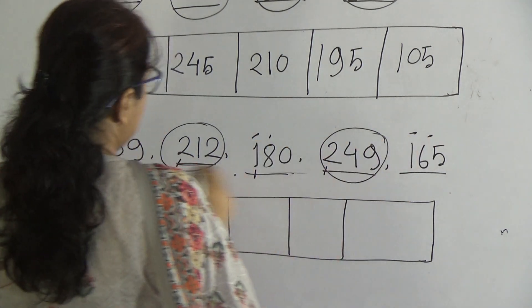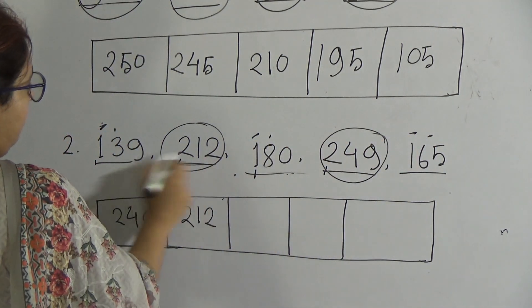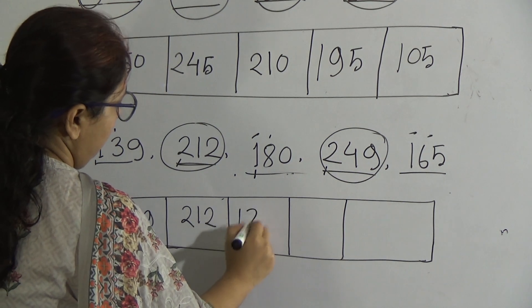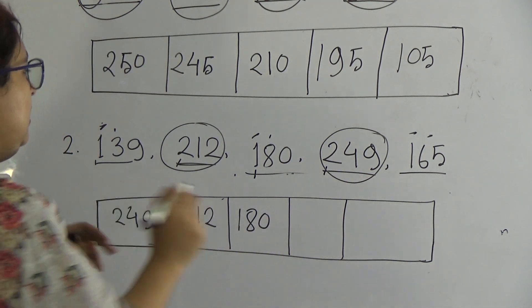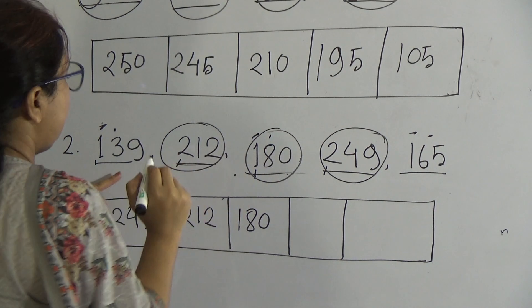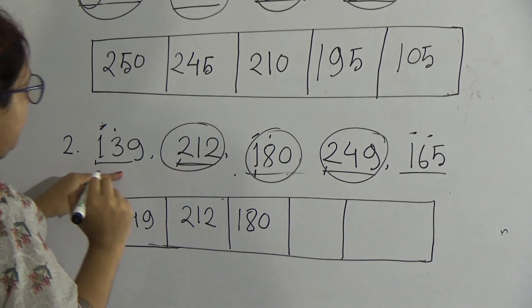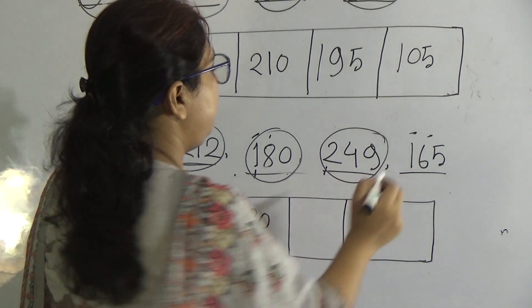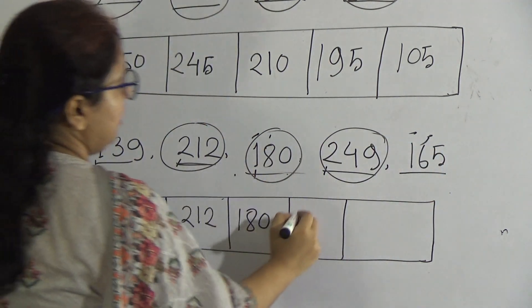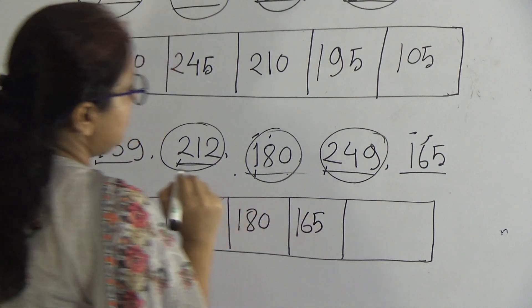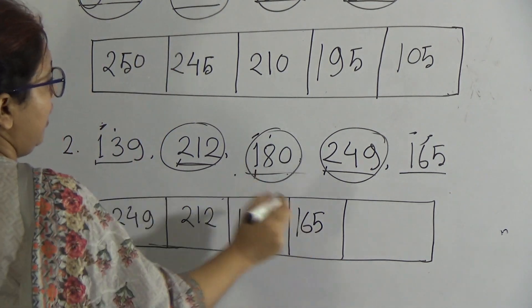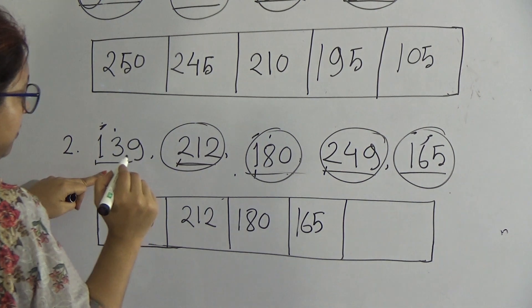Now move on: 212, 139, 180, and 165. First digits are also same: one, one, and one. Now move to second digits: three, eight, and six. So eight is the biggest number from three numbers. Now you can write here easily 180. Now circle this. The fourth number: 165, now write here 165. Now circle this. And last number 139.